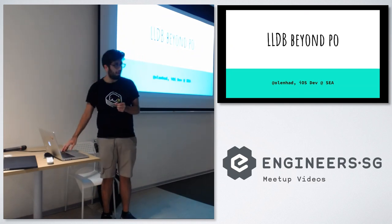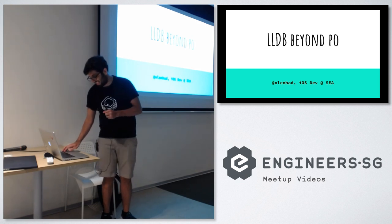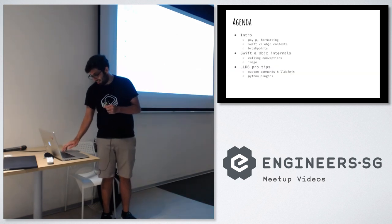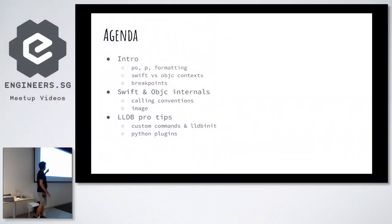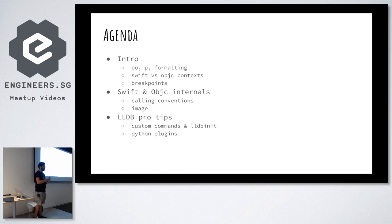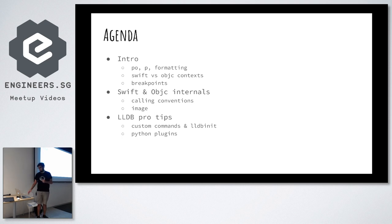It's going to be quite a few demos, so I'll try to be as fast as I can. Here's today's agenda: first we're going to talk about PO, our good old friend, and how it actually works, along with some associated cousins of PO that LLDB offers. We're going to talk about how LLDB switches between Objective-C and Swift context, and we'll look in detail at breakpoints — what different kinds there are and how you can use them to do more interesting stuff other than just being a breakpoint.